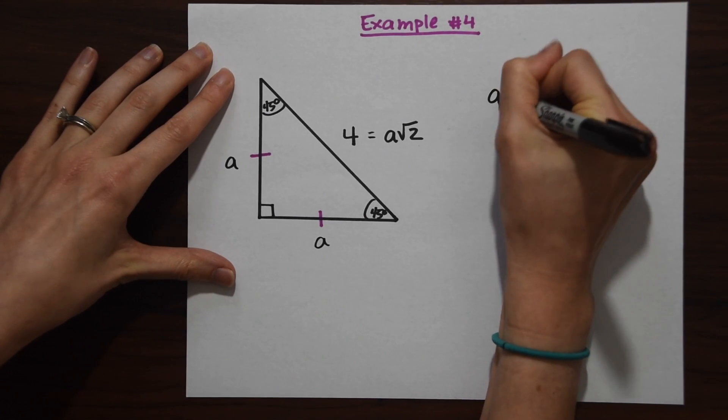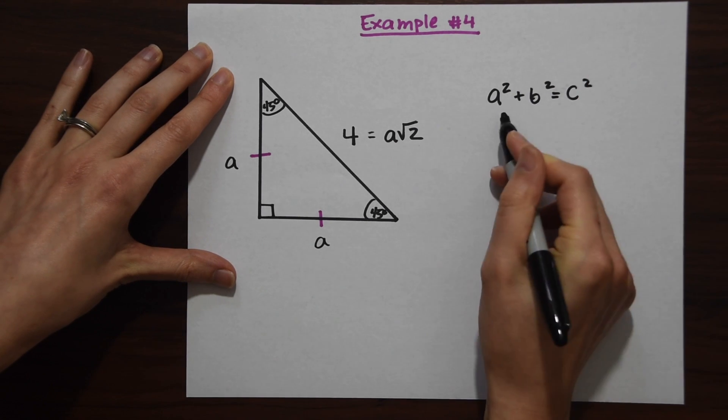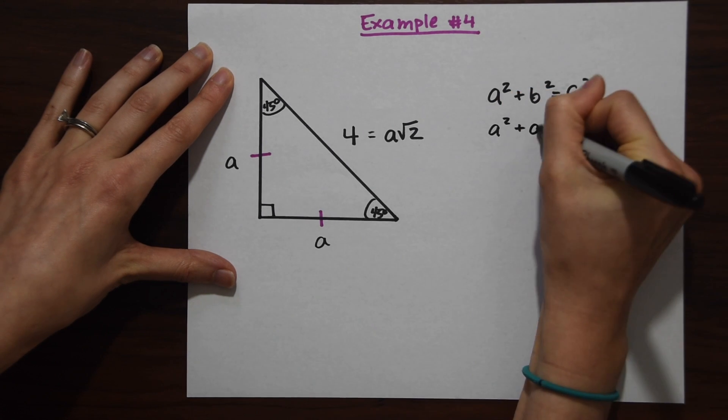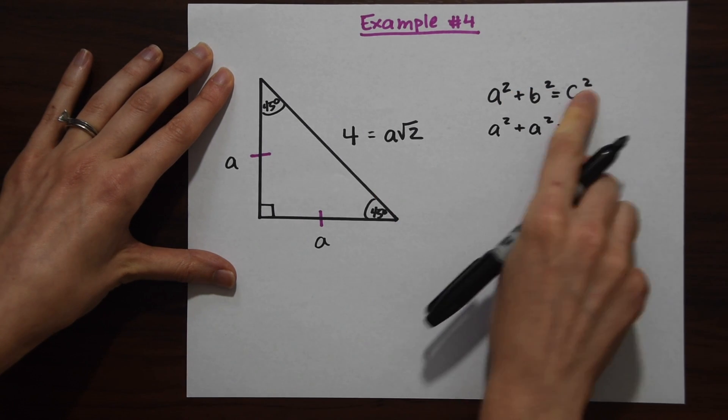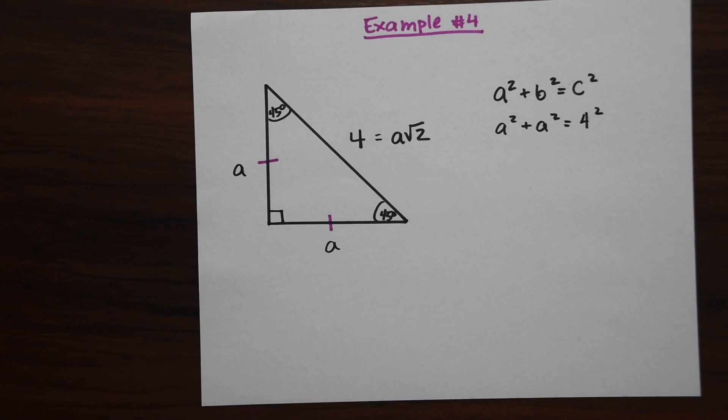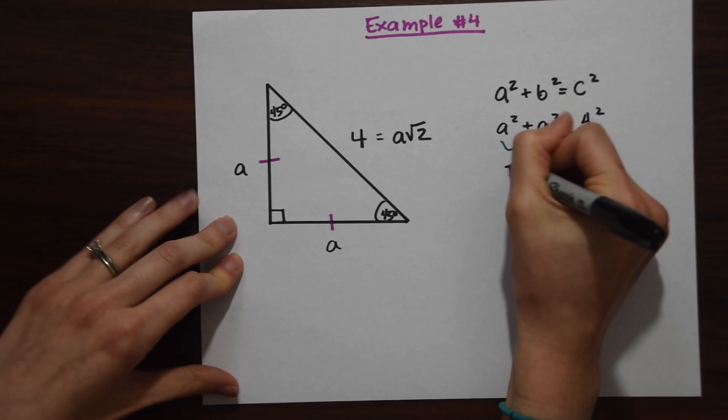Let's write that out: a squared plus b squared equals c squared. Now fill in with our values that we have here. We have a squared plus a squared equals—we know the value of c is just 4—so 4 squared. We can combine like terms again, giving us 2a squared equals 16.